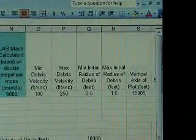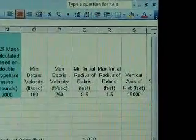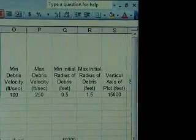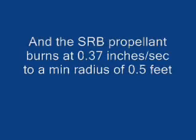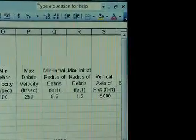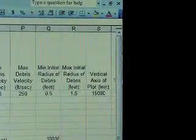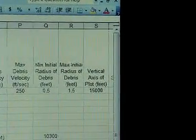0.5 feet for minimum radius to one and a half feet maximum radius. That's three feet across, basically one meter. And the vertical axis of our plot is 15,000 feet. That's from about three fourths of the way down the page up to the top.